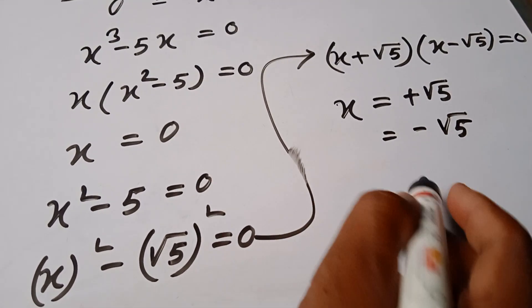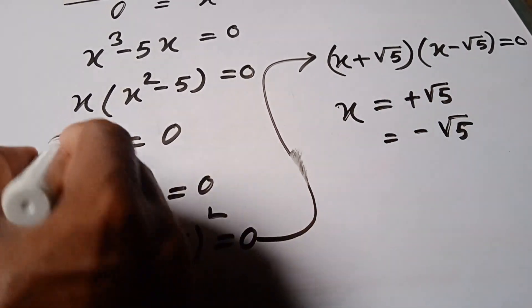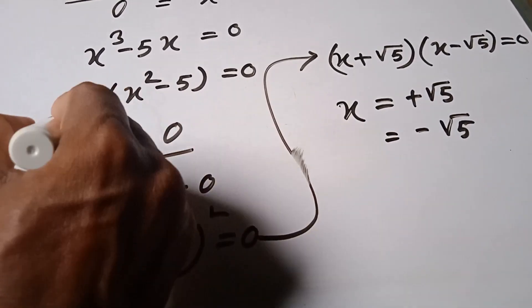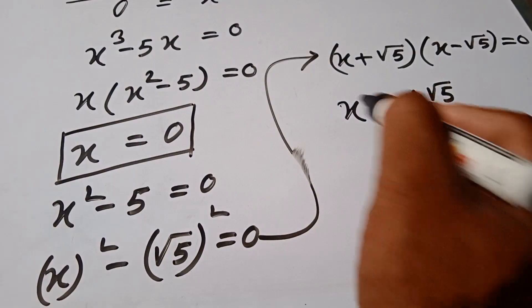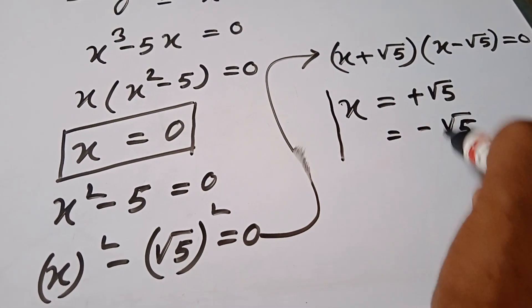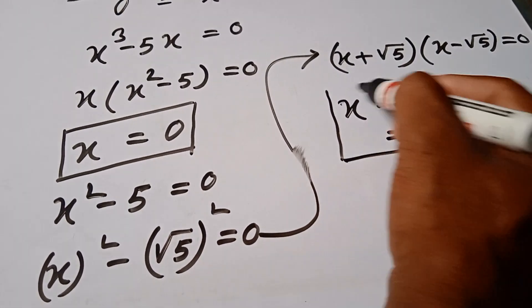So, the value of x in this problem: x is equal to 0, or x is equal to plus or minus square root of 5.